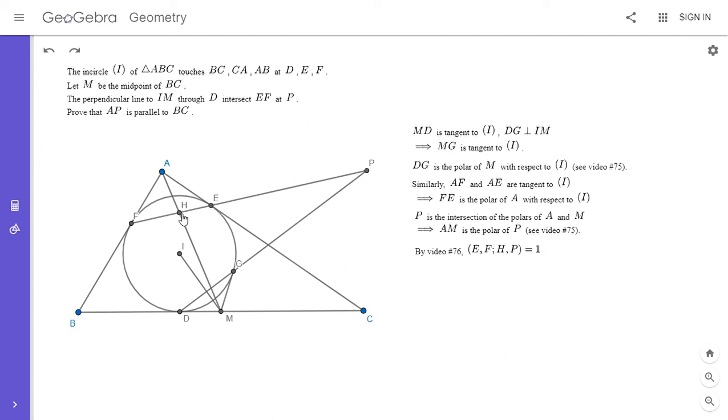So since H lies on the polar of P, because H is on AM, then the cross ratio EFHP has to equal one.